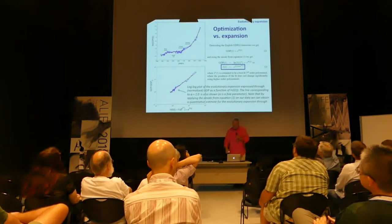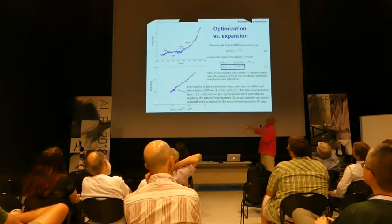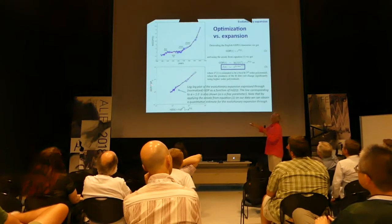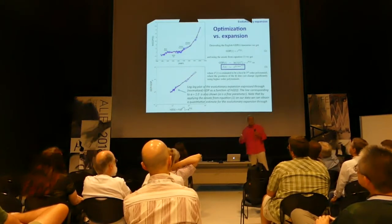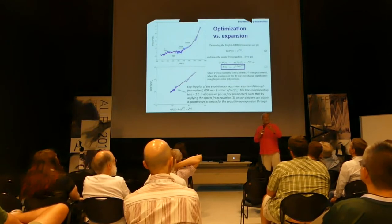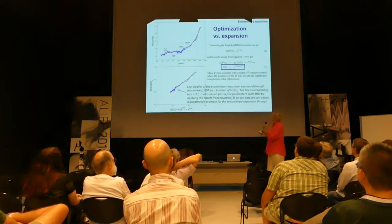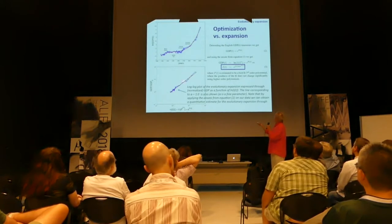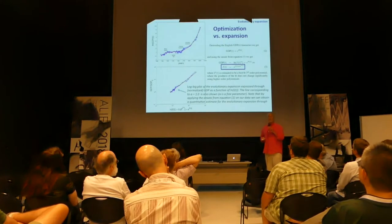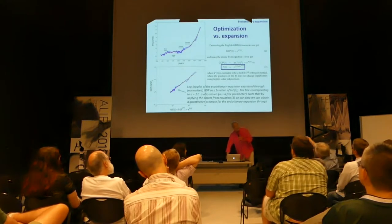We spent six months confusing ourselves about this. This is GDP — we've normalized it by taking the original GDP divided by GDP at time zero, which is 1270, so we start with 1 and then it grows.